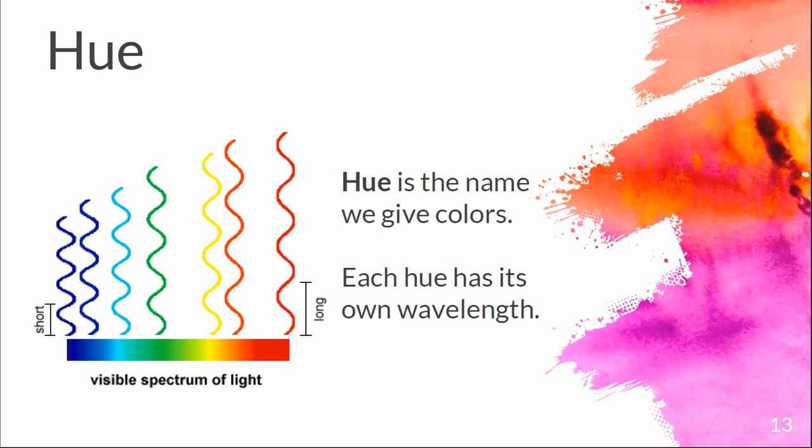It's important to note that cool colors have shorter wavelengths and warm colors have longer wavelengths. A way I remember it: if I'm cold, I pull my arms together — cool colors have shorter, closer wavelengths. If it's warm and hot, I want to fan out and get space — warm colors have longer wavelengths. That's how I remember it when having a brain fart.